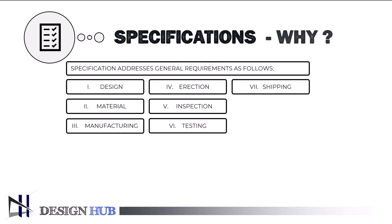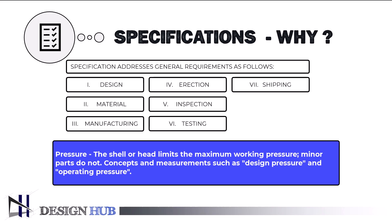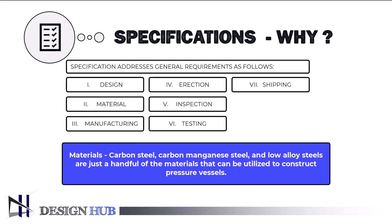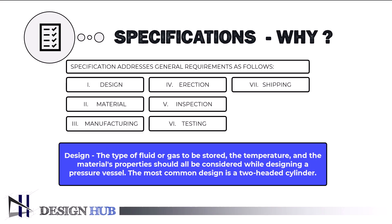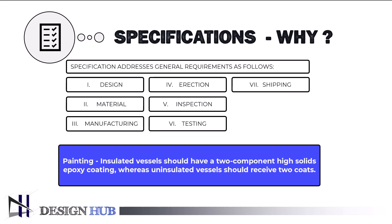Pressure vessel specifications may include the following. Pressure: minor pieces do not limit the highest possible working pressure — the shell or head does. Terms like service pressure and design pressure can be used to describe pressures. Materials: carbon steel, carbon manganese steel, and low alloy steels are just a few of the materials used. Design: a pressure vessel's design should account for the type of fluid or gas, its temperature, and the material's characteristics. The most popular design is a two-headed cylinder. Painting: high solids epoxy coating in two components should be applied to insulated vessels, and two coats to uninsulated vessels.